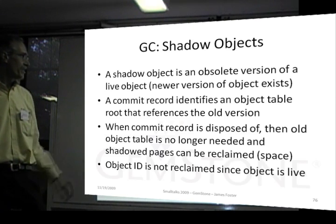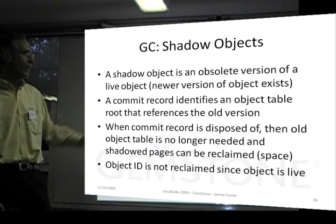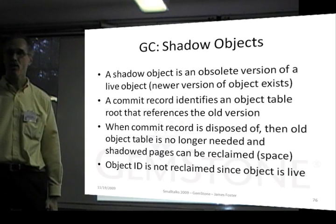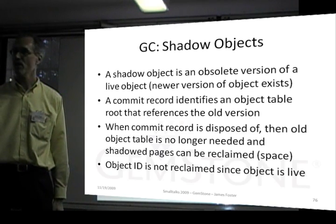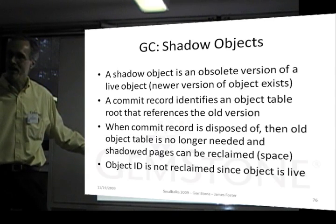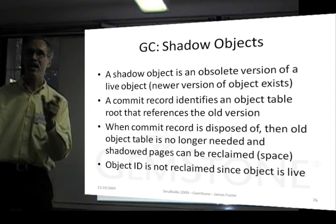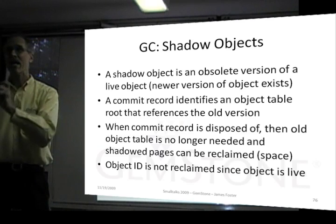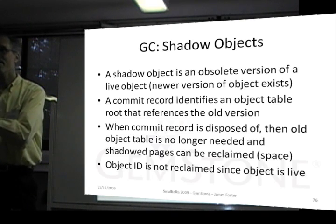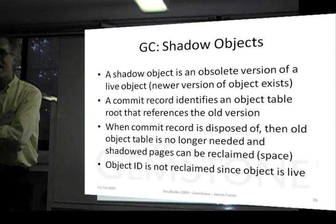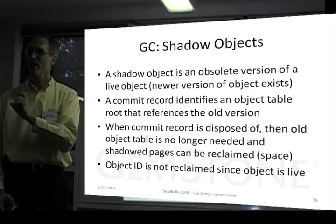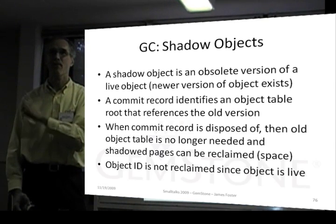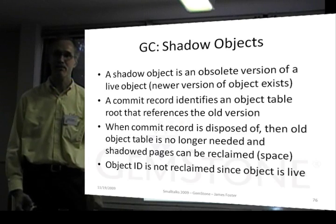The commit record identifies the object table that references the old version. When the commit record is disposed of, the old object table is no longer needed and the shadow pages can be reclaimed. We don't reclaim the object ID, but we reclaim the space taken up on the shadow page for the shadow object. We can reclaim space on the page that used to hold the old version, but we can't reclaim the object ID.